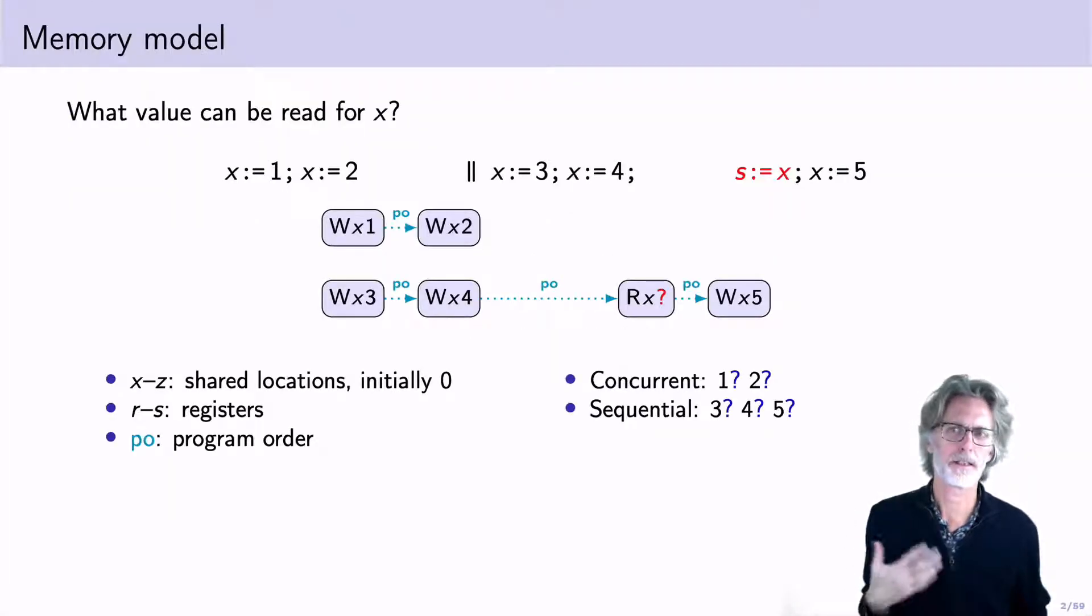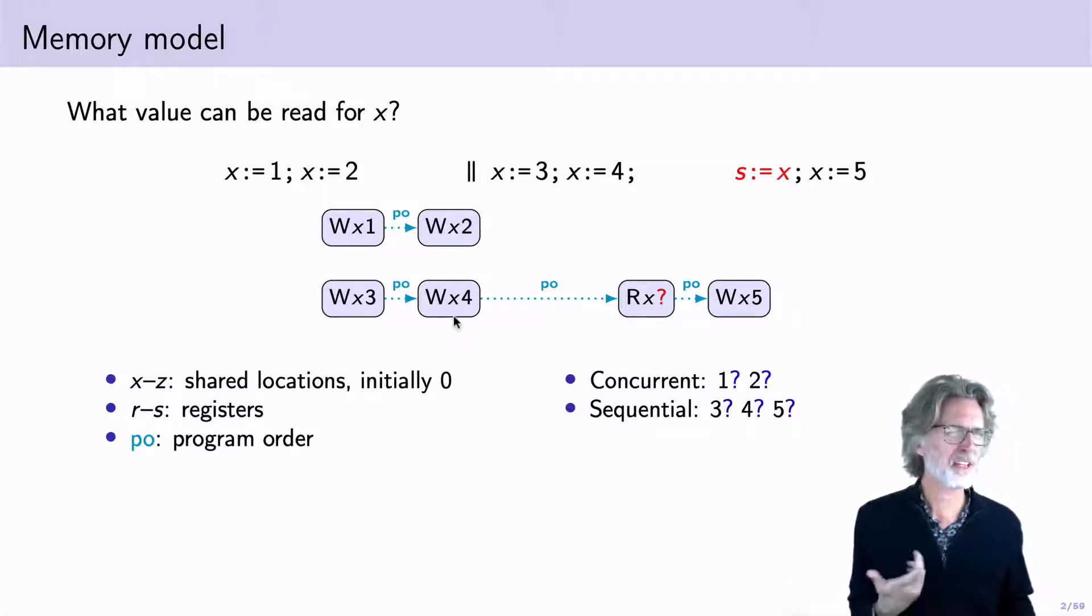The whole idea of a memory model is to tell us what values can fulfill a read, such as this read of x here. I'm following the conventions here that x through z are shared locations, they'll all be initialized to zero. We have some registers, which are thread local like s here, and in the diagram I'm showing you the program order, that's per thread order for these two threads. In this picture you can sort of see that it's reasonable for this read to see 4, but it would be pretty unreasonable for it to see the stale value or the future value within the thread. But these two values over in the other thread are perfectly available.